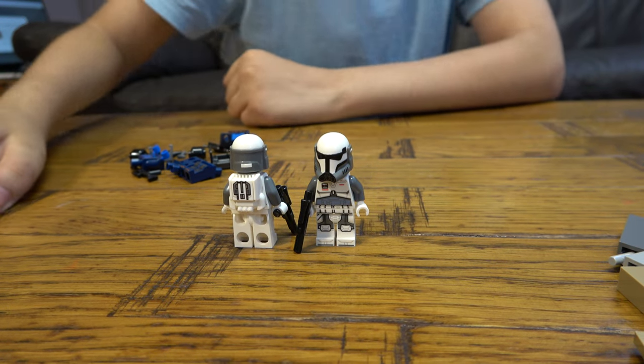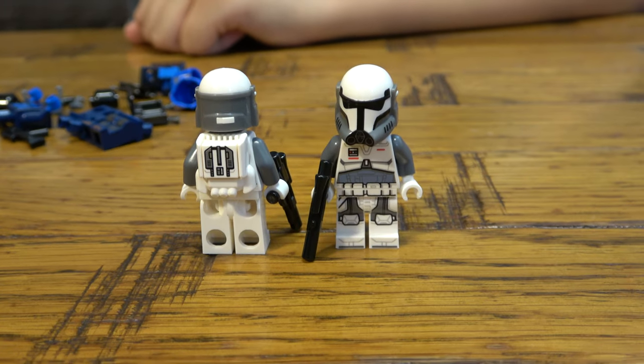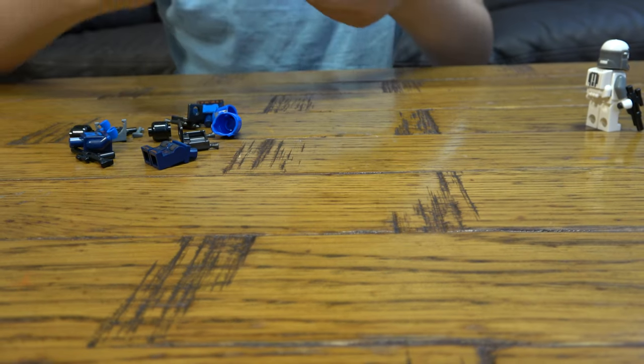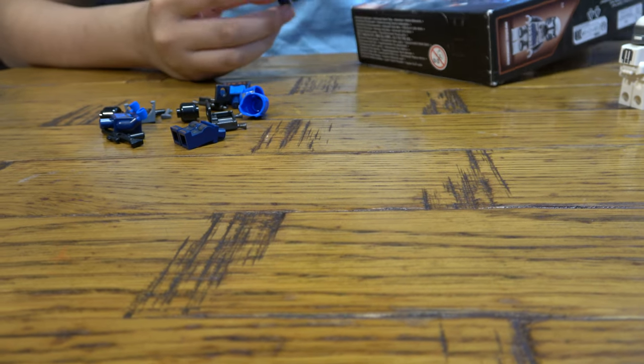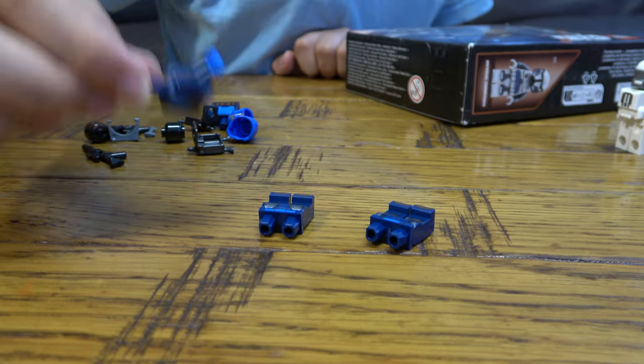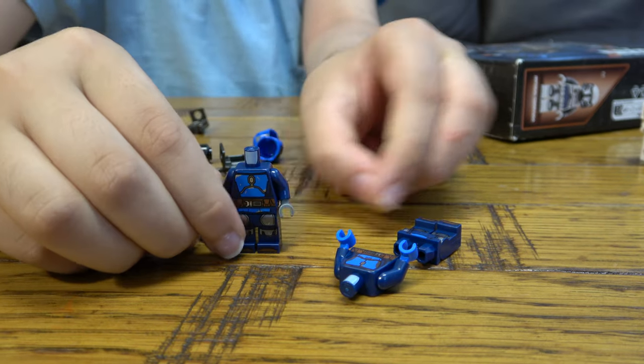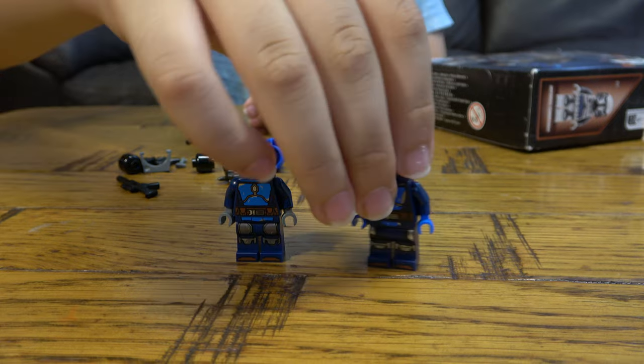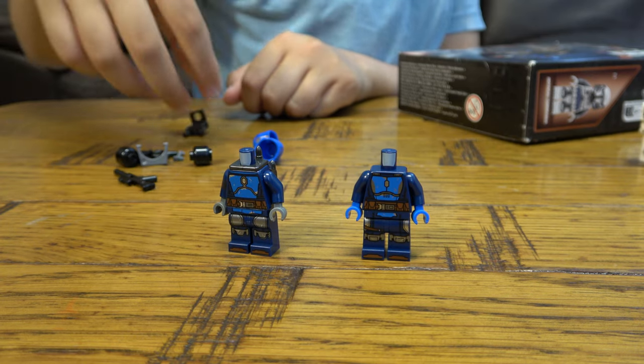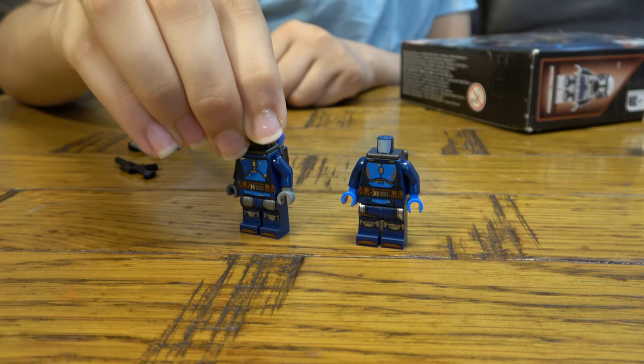Okay. So now we can put those aside. And now let's build the Mandalorians. Now this is going to be a little bit tricky because even though they look the same, they're different. So this goes for that. And then... Okay. This one has blue hands, which is cool. Jetpack and jetpack. I'm going to have a lot of jetpacks now, especially the grey ones.